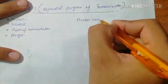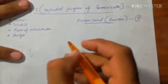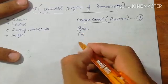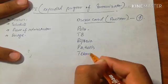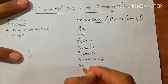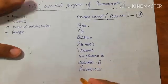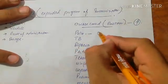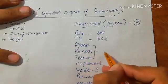Coming towards the diseases covered by EPI in Pakistan, they are total of nine in number and they include: polio, tuberculosis, diphtheria, pertussis, tetanus, H. influenzae type B infection, hepatitis B virus infection, pneumococci, and lastly measles. The vaccine names are OPV for polio, BCG for tuberculosis, DPT for diphtheria, pertussis and tetanus.